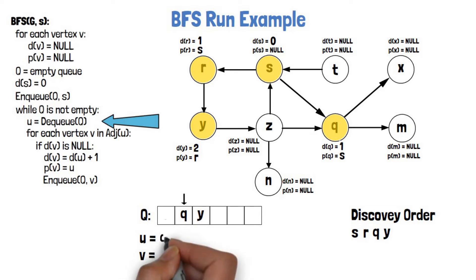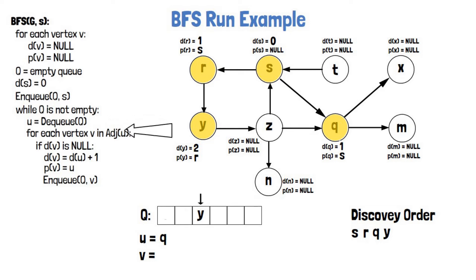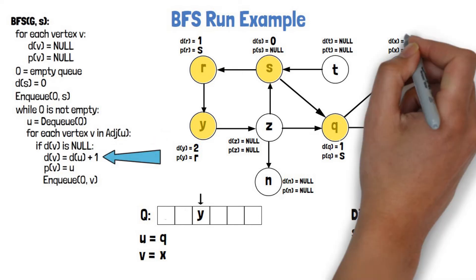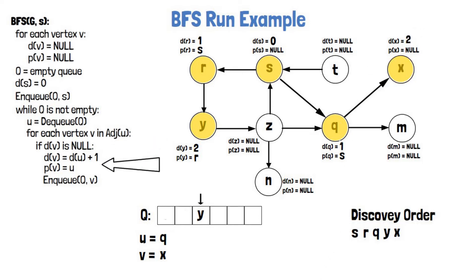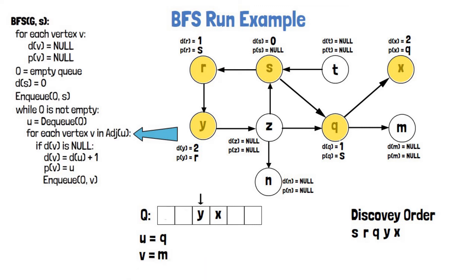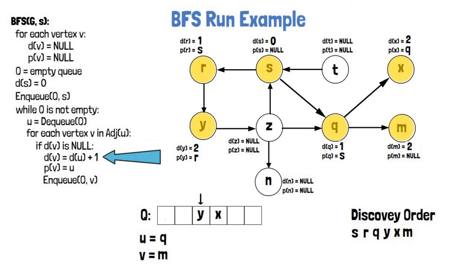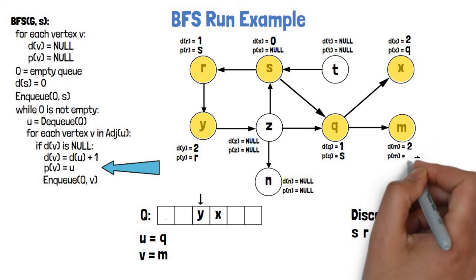We go over the neighbors of Q, starting with X. The distance of X is still null, so we discover it, update its data, and add it to the queue. We move on to the next neighbor of Q, which is M. M is also not yet discovered, so we mark it, update its data similarly to X, and add it to the queue as well. We've finished handling the neighbors of Q.